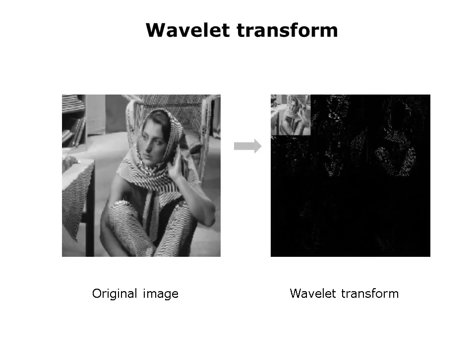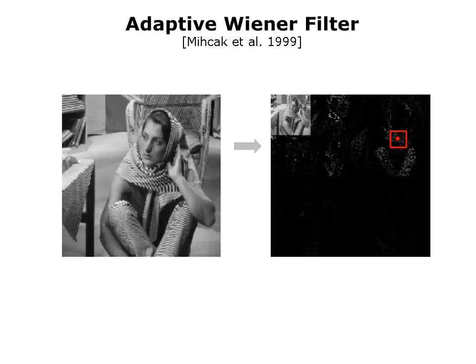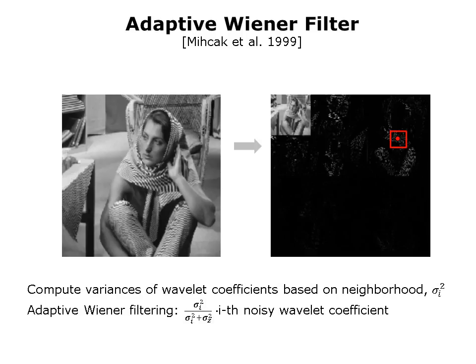So how do we perform image denoising? We'll illustrate with two examples. The first one is for two-dimensional images, and the second for hyperspectral imaging, which can be viewed as a three-dimensional image cube. In the 2D case, we have an original image, and we apply a wavelet transform yielding wavelet coefficients. The adaptive Wiener filter approach by Michak et al. looks around each wavelet coefficient and its neighbors in order to estimate the variance. We compute variances based on the neighborhood, and then the adaptive Wiener filtering is applied to calculate the noisy wavelet coefficient. Then we take a reverse transform back to the image — and that's the image denoiser.